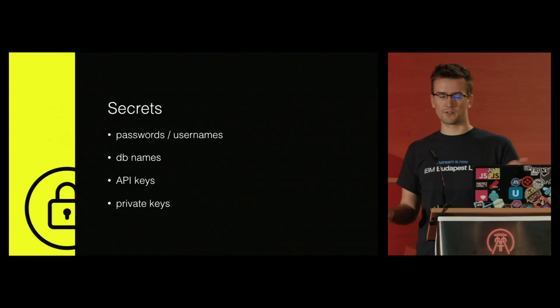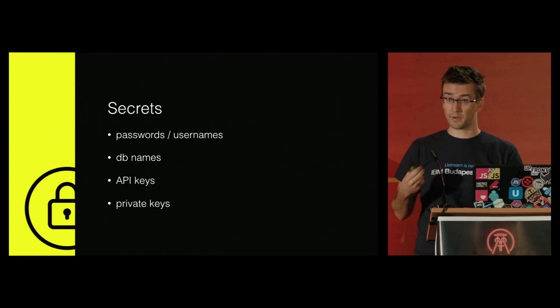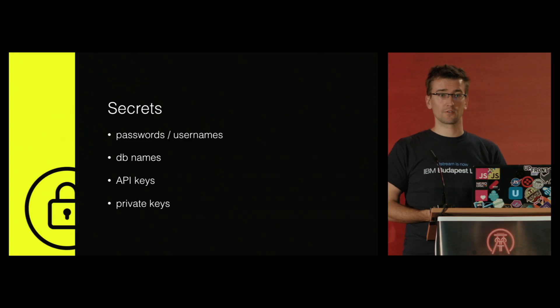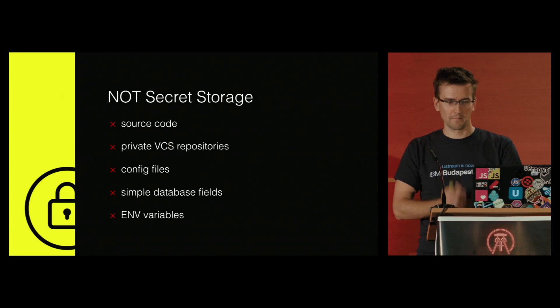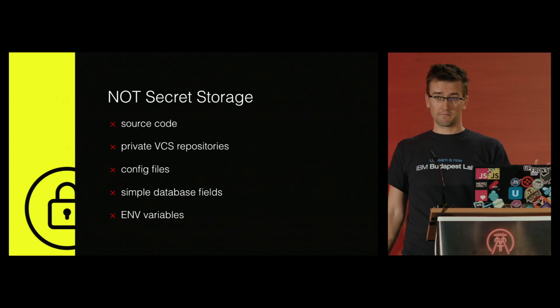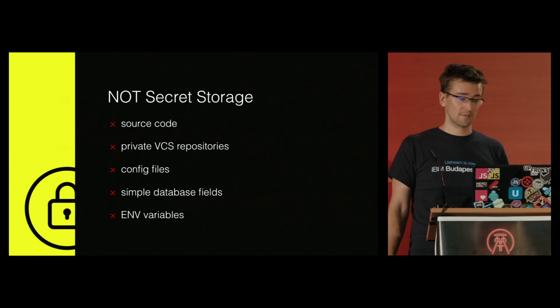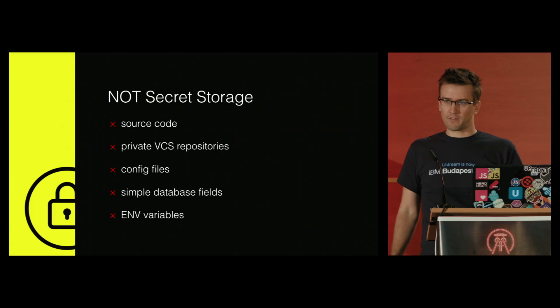I mentioned secrets and sensitive data a few times. What are secrets from a developer's point of view? Passwords and usernames for databases, even database names — those are obvious. But also API keys, which provide access to services you are paying for, and private keys, which you can use to access remote machines and services. Please do not put your secrets into source code, private version control systems, config files — they usually end up on a version control system anyway — simple database fields, or environment variables. Be very careful with environment variables, because they are easy to leak through logging or error reporting.